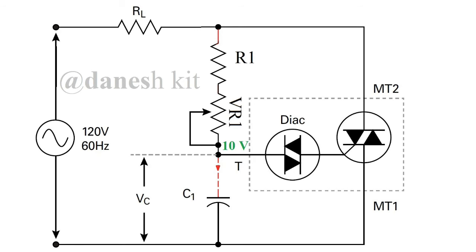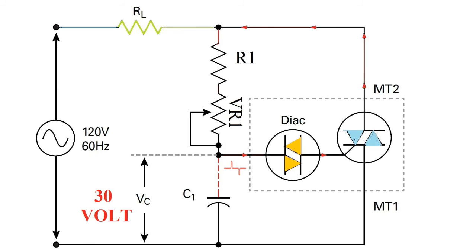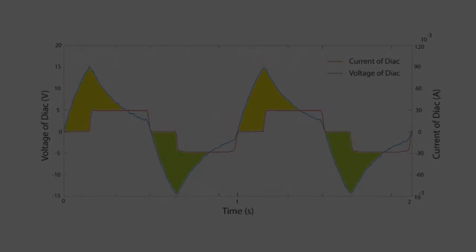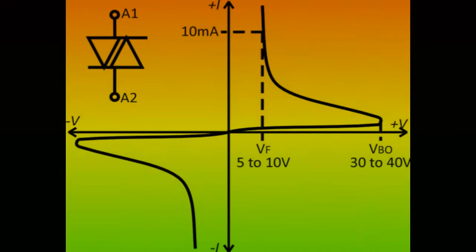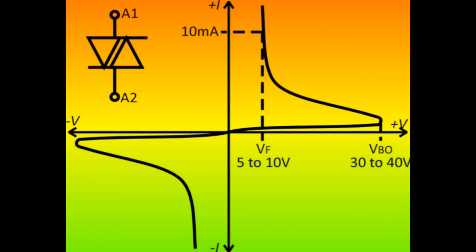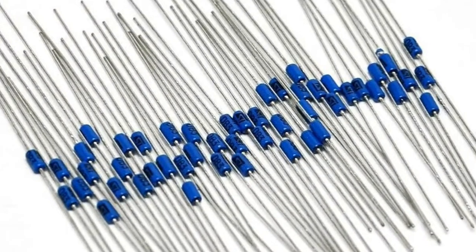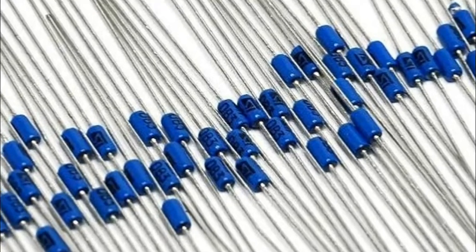Since both three-layer and five-layer DIACs have a negative resistance region, an oscillator circuit can be formed using these elements. In general, a five-layer DIAC is a bidirectional semiconductor switch that can be turned on in forward and reverse polarity above a specified voltage. It is often used to provide defined switching for triacs.